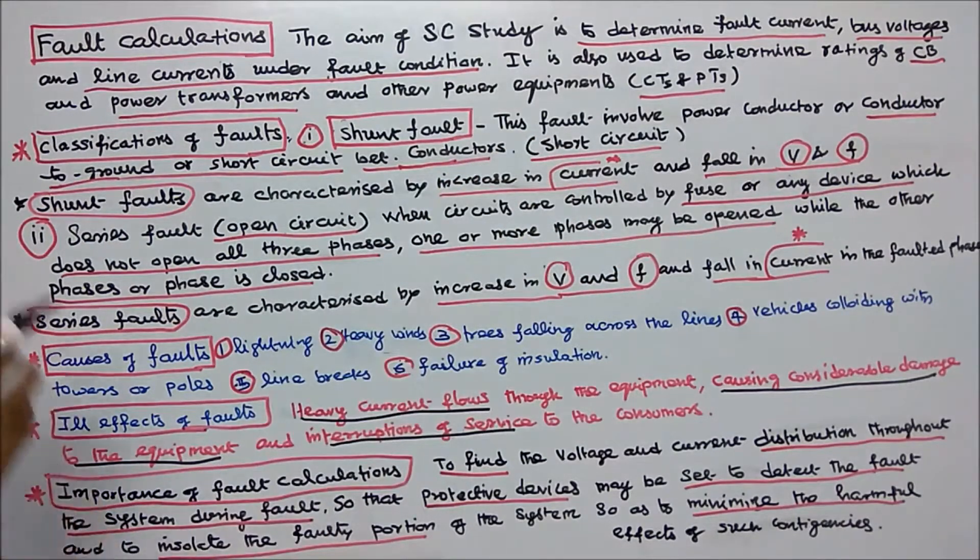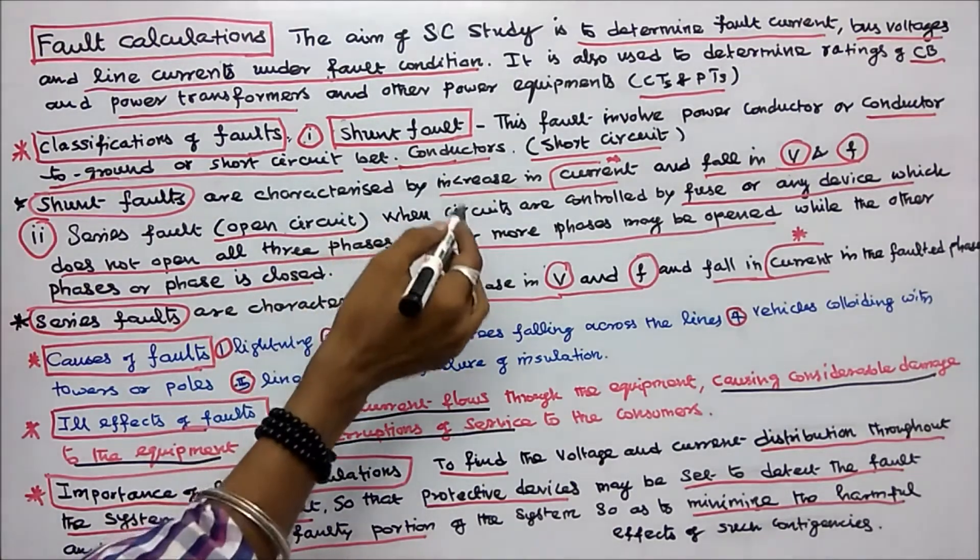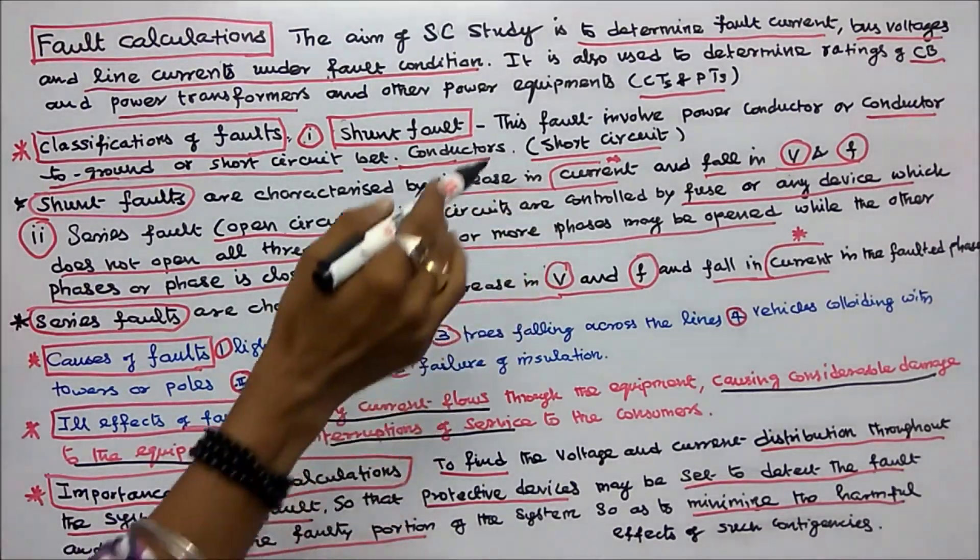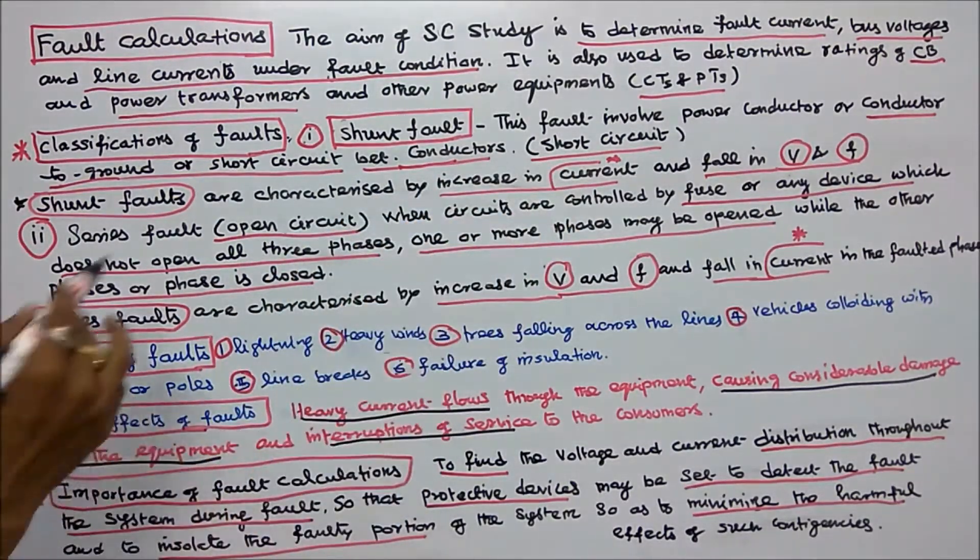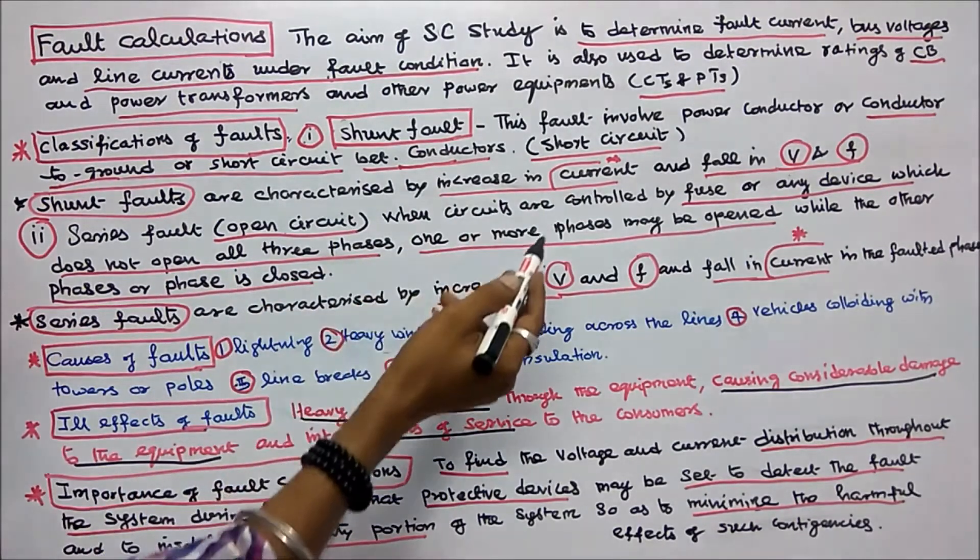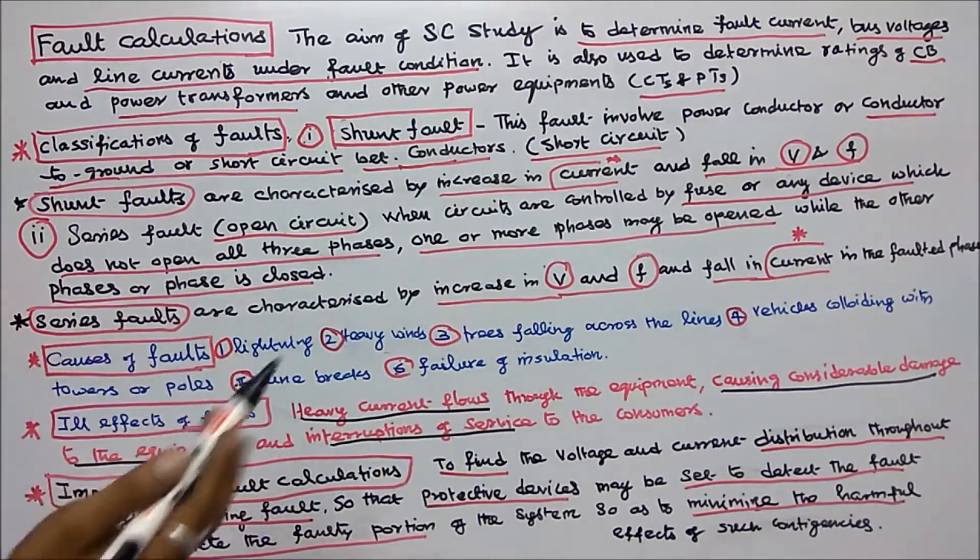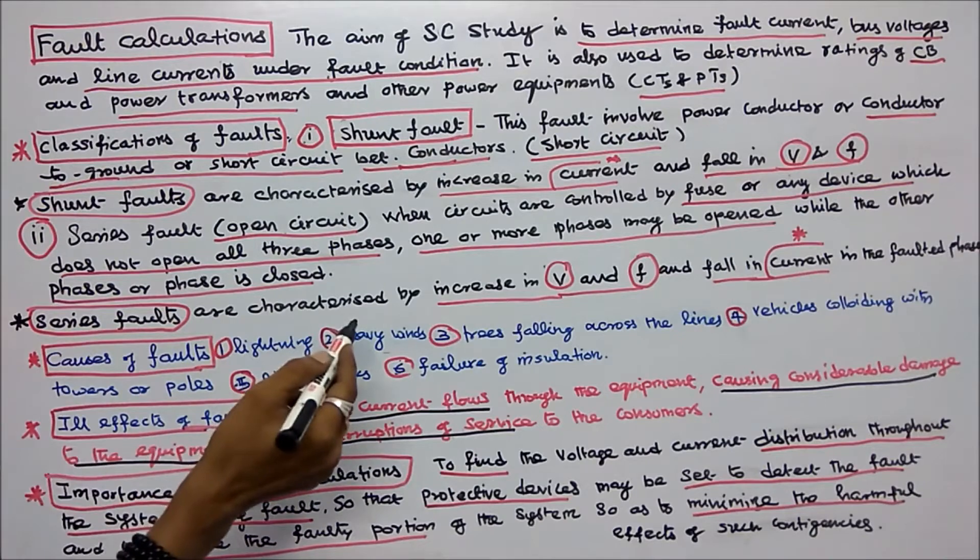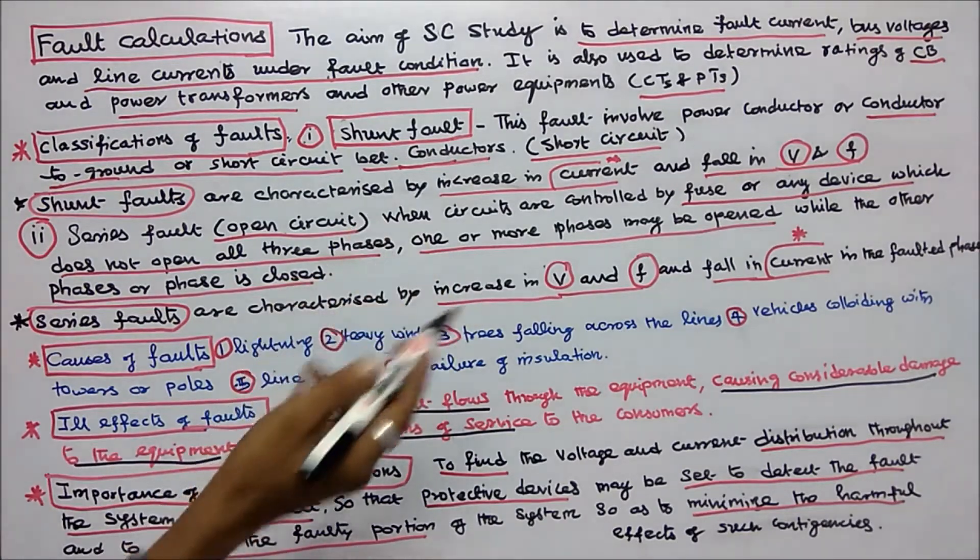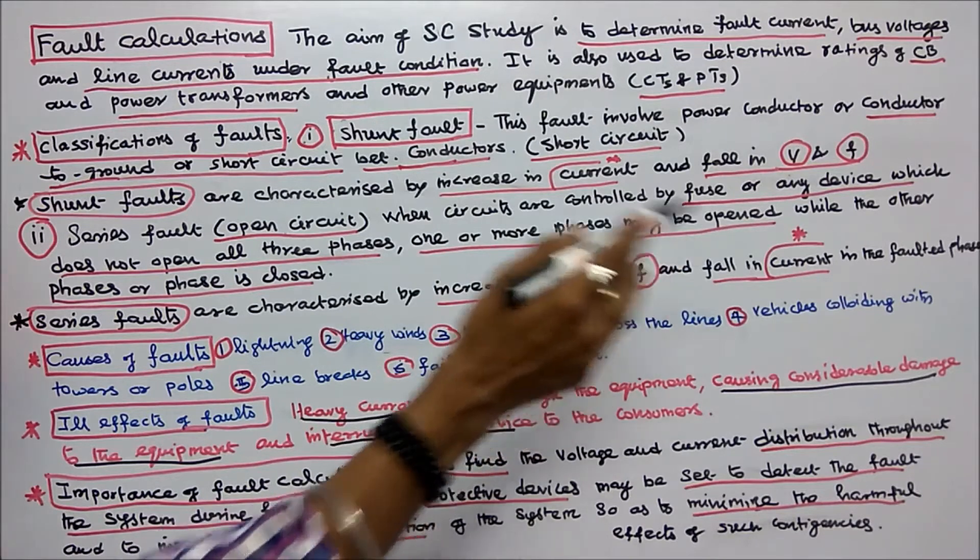The second is series fault, that is open circuit, when circuits are controlled by fuse or any device which does not open all three phases. One or more phases may be opened while the other phases are closed. Series faults are characterized by increase in voltage and frequency and fall in current in the faulted phases.